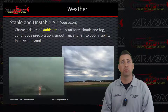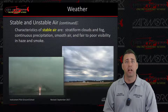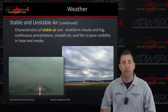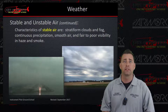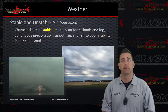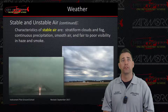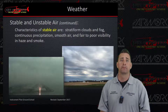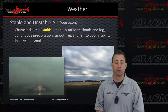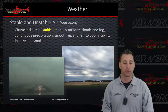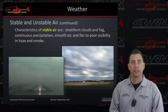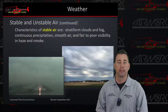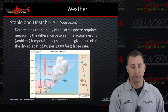Characteristics of stable air are stratiform clouds and fog, continuous precipitation, smooth air, and fair to poor visibility in haze and smoke. Here are a couple of good pictures showing poor visibility with those stratiform clouds — nice and flat, not much vertical development.